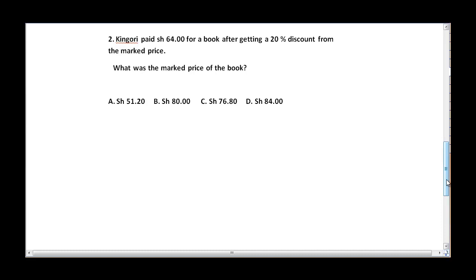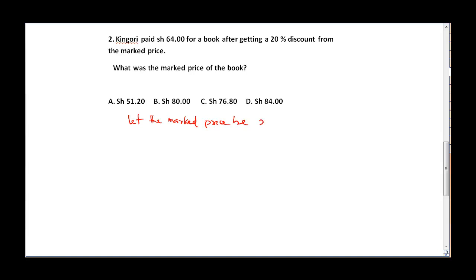Question two says: Kingori paid 64 shillings for a book after getting a 20% discount from the marked price. What was the marked price of the book? To solve this, let the marked price be X. A 20% discount means 20 over 100 multiplied by X, which gives us 0.2X — this is the discount amount.